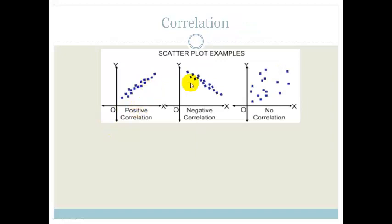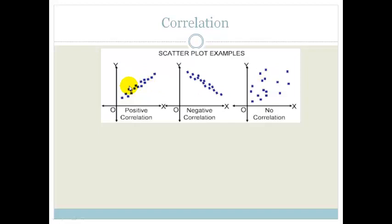We've got three different types of scatter plots here. If it looks like this, in other words if this scatter plot can be seen to have basically a line of best fit which would be a positive straight line, we say that the data has a positive correlation.